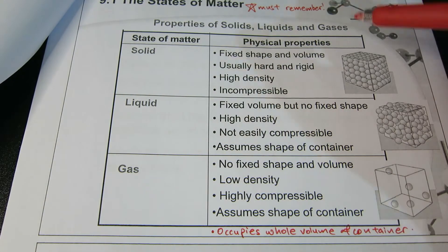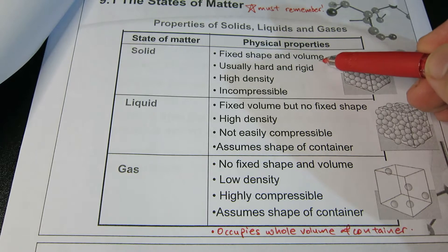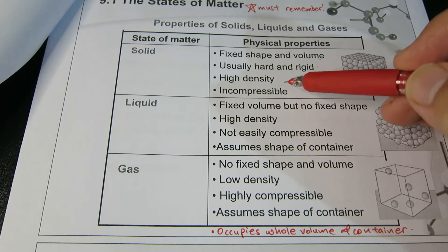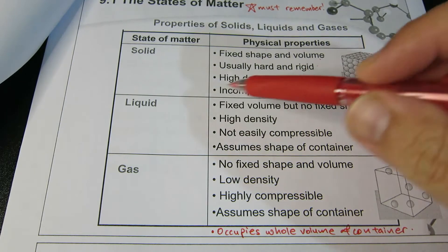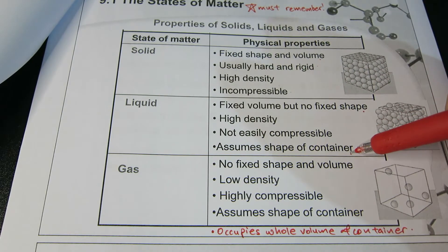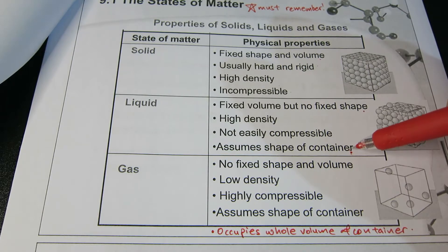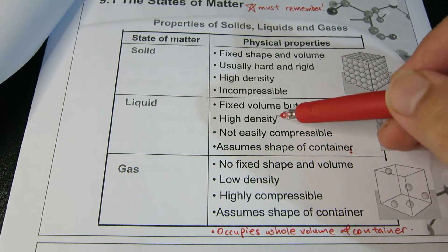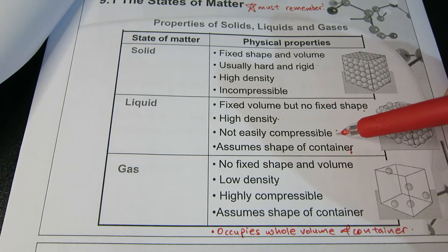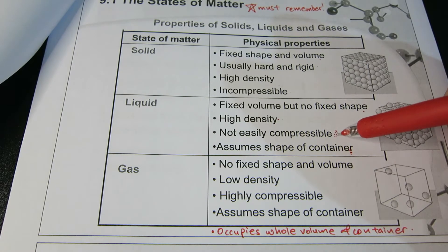For solids, they are fixed in shape and fixed in volume. They are usually hard and rigid, very highly dense, and they are incompressible. For liquids, they usually have fixed volume but no fixed shape — that's why they always assume the shape of the container. If you put liquid in a square container it takes a square shape; in a circular beaker, it takes the beaker's shape. Liquids are also quite highly dense and not easily compressible.